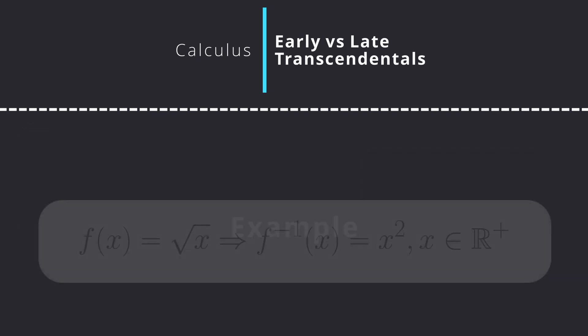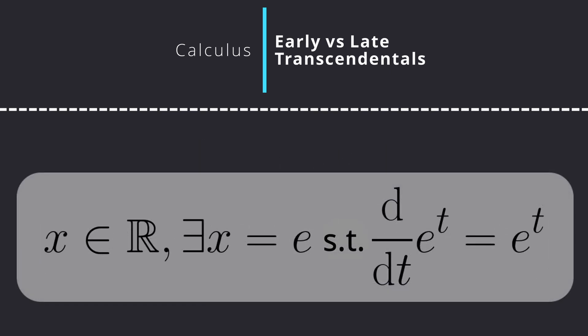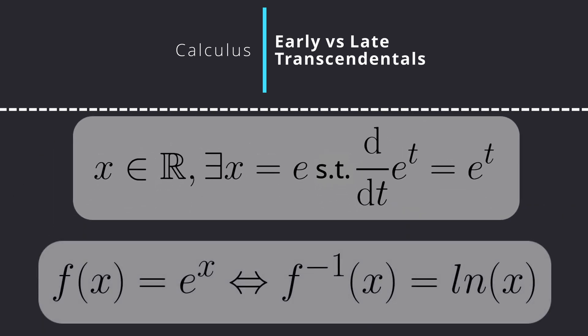Early transcendentals takes a less rigorous approach and starts off by defining the notion of inverse functions, such as the inverse of the square root of x being x squared from 0 to infinity as its domain. Typically, a definition follows that there exists some real number e such that when you differentiate e raised to x, you get e raised to x — or rather, when you differentiate e to the x and evaluate it at x equals 0, you get 1. By the notion of an inverse function, there must exist some f(x) such that f(e to the x) equals x, and this directly leads to the definition of ln x as the inverse of e to the x.